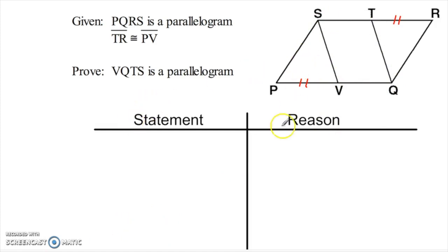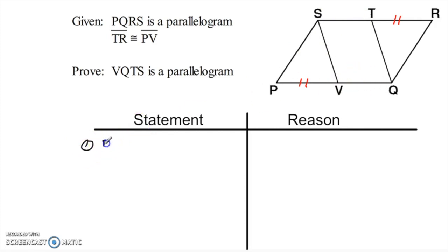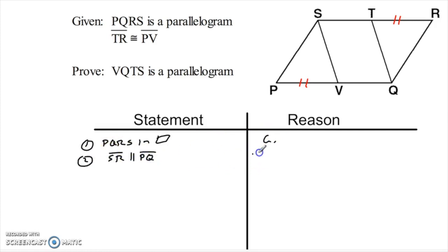There are a couple of different tactics I could take. The first thing I notice is that if the big shape is a parallelogram, it has all the properties of a parallelogram — in particular, SR is parallel to PQ. I might start there because that's going to help me prove that ST is parallel to VQ. So if PQRS is a parallelogram — that was my given — then SR is parallel to PQ, because in a parallelogram, opposite sides are parallel.